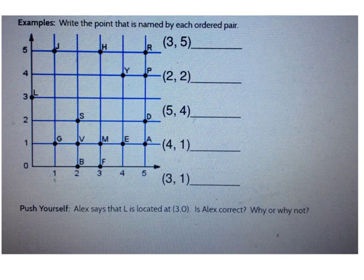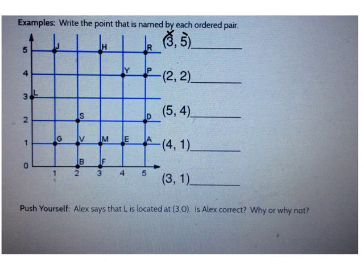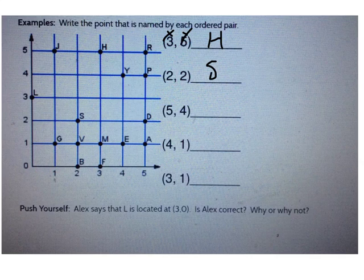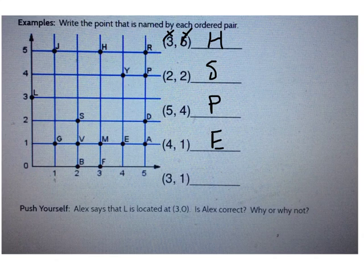You may also be asked to locate a point based on its ordered pair. Let's find the point named by (3, 5). Remember, we go over first — 3 is the x-coordinate — and then up 5. So 1, 2, 3 over, then 1, 2, 3, 4, 5 up — the point is H. Which point is at (2, 2)? It's S. Which point is at (5, 4)? It's P. Which point is at (4, 1)? It's E. Which point is at (3, 1)? It's M.